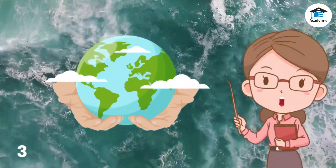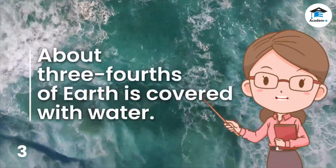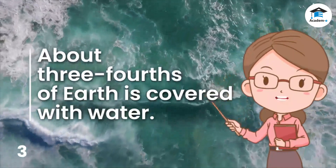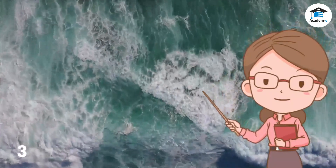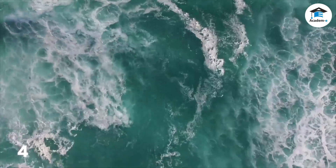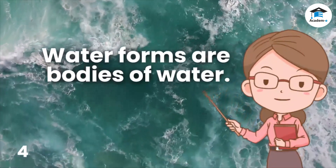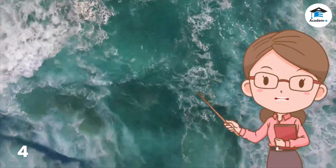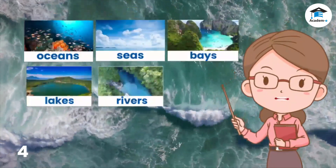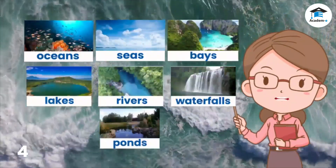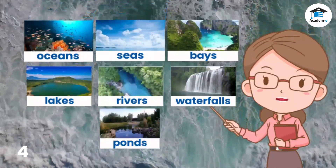Hello kids! For this week's lesson you're going to learn about the different water forms on earth. A big part — about three-fourths of earth — is covered with water. Water is very important to all living things. Water forms are the bodies of water. Different water forms are found on earth. These include oceans, seas, bays, lakes, rivers, waterfalls, and ponds. Let's learn more about these water forms.